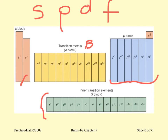Do you remember how many electrons can fit into the S orbital? Two — and it has two columns. How many electrons can fit in the P orbital? Six — and it has six columns. D has 10 columns, and F has 14 columns.